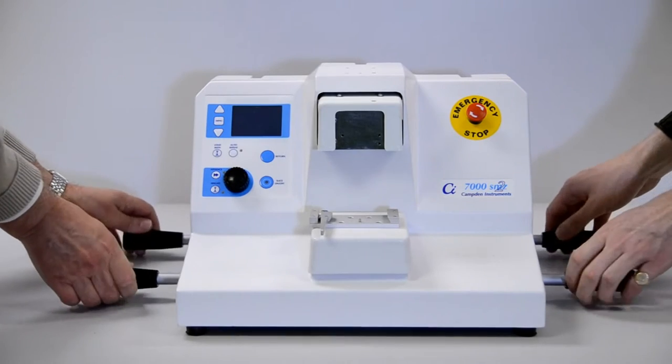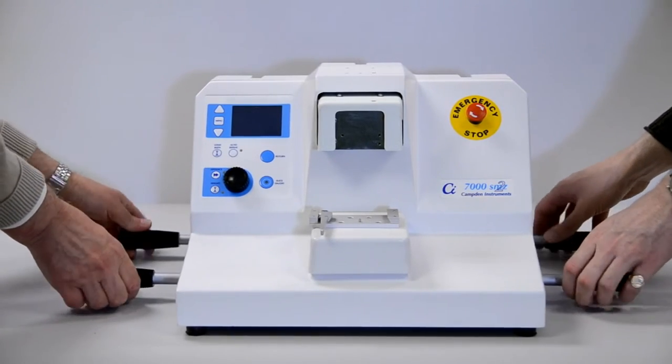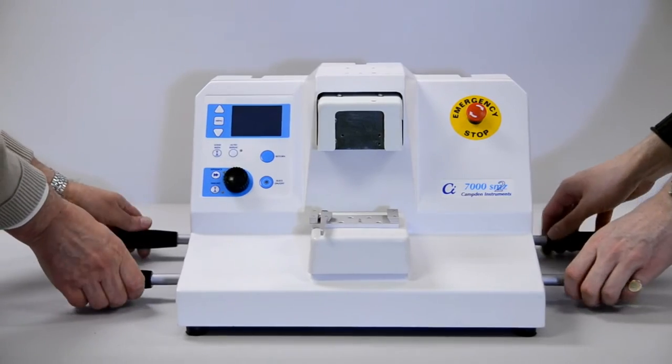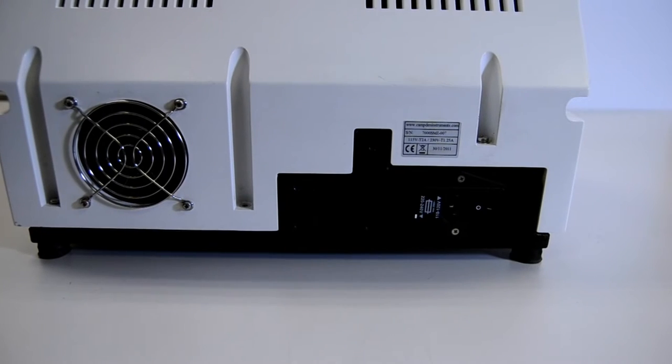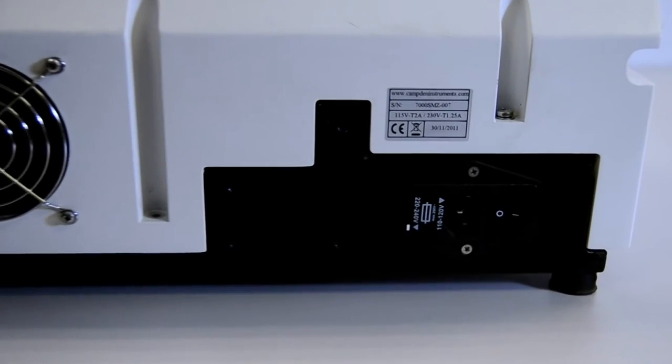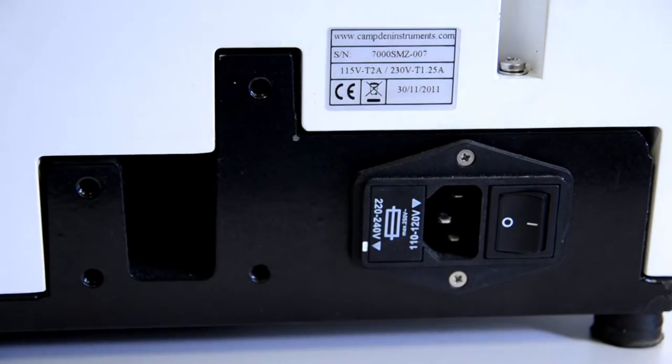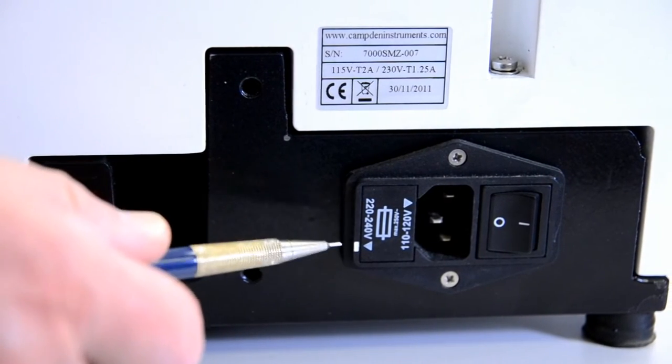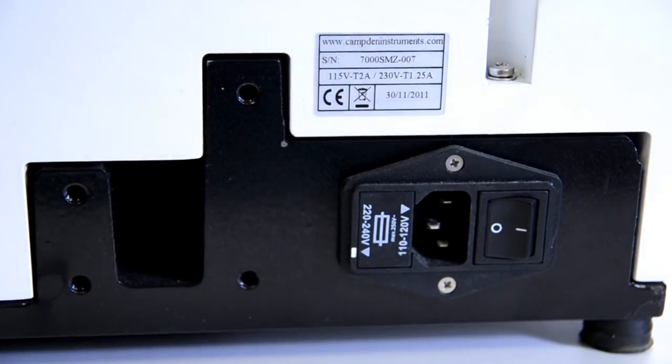The wooden shipping box in which the instrument was delivered also contains the specimen bath assembly, tool case, electrical lead, and any optional extras that you may have ordered. Before connecting the instrument to the electrical supply, check that the supply voltage setting on the rear panel is correct for your particular country. The operator's manual shows how to check or change the setting in greater detail.